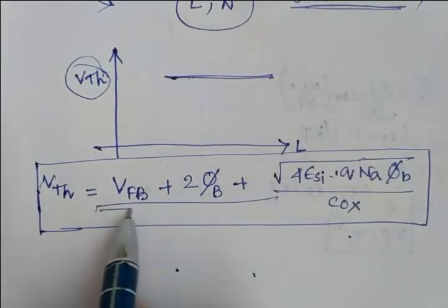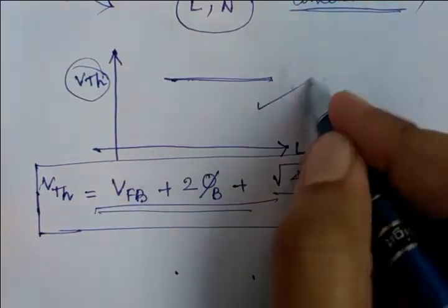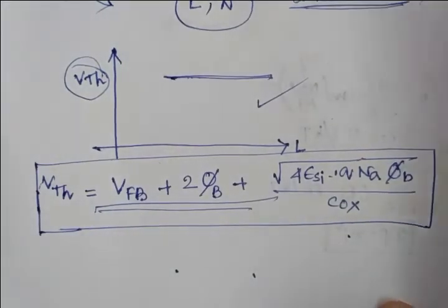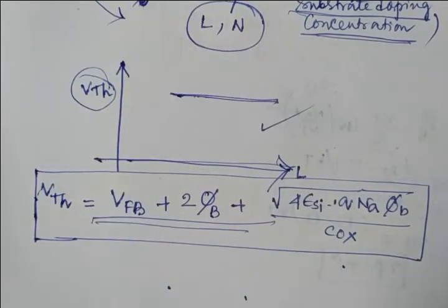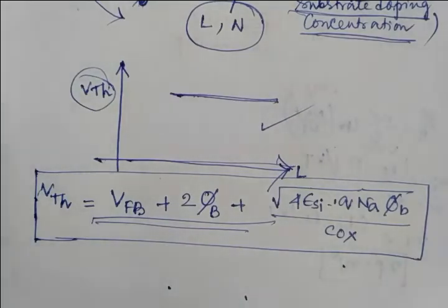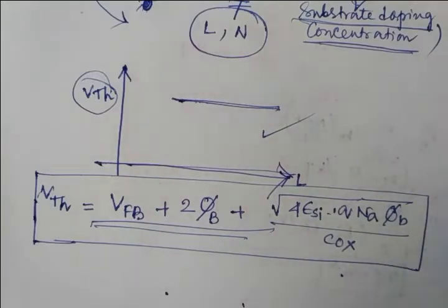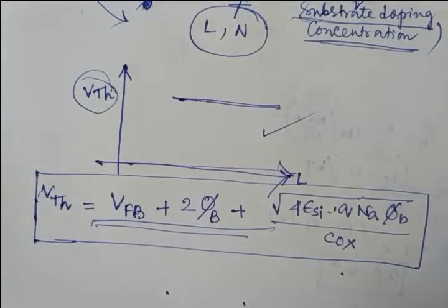Vth is exactly flat because it is not dependent on length or width — that is why this graph is significant. However, when we start decreasing the length — going from a long-channel transistor down to the nanometer level, sub-micron to 0.5 or 0.2 micron — something important happens. This is the short channel effect.